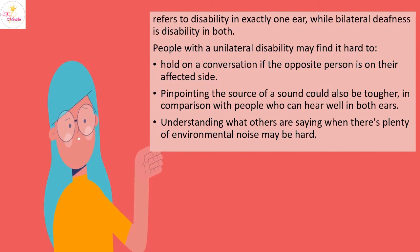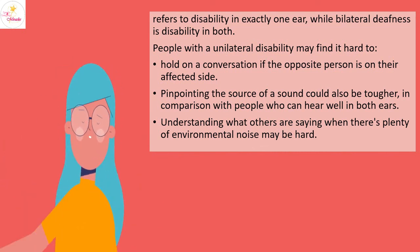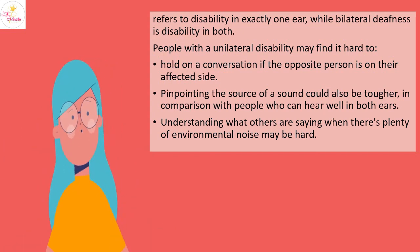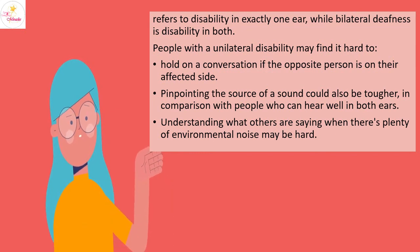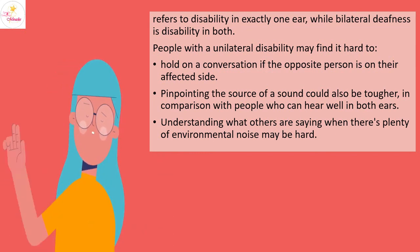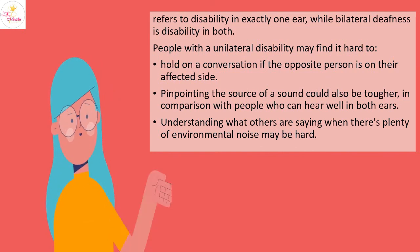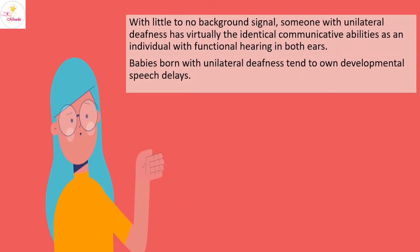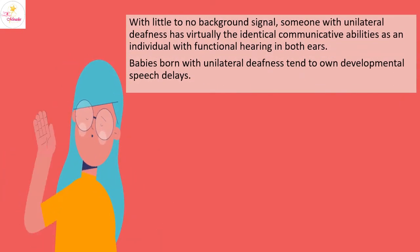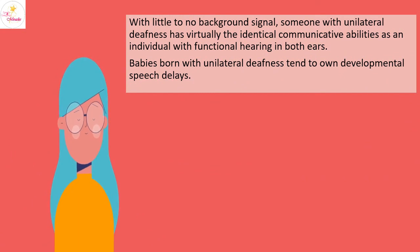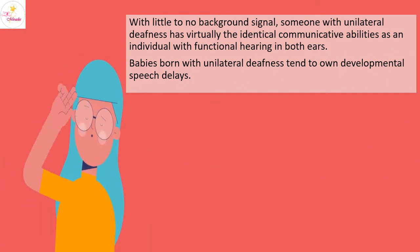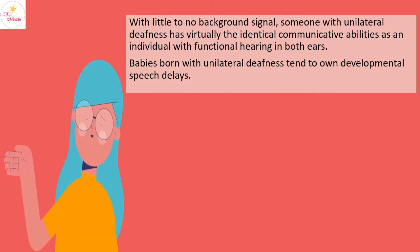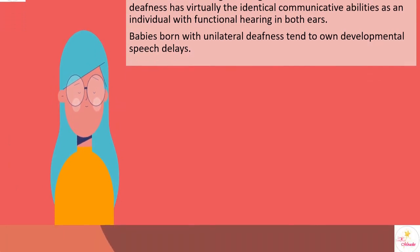Unilateral deafness refers to hearing loss in one ear, while bilateral deafness is loss in both ears. People with unilateral deafness may find it hard to hold a conversation if the other person is on their affected side. Pinpointing the source of a sound is also more difficult. Understanding speech in noisy environments is harder. However, someone with unilateral deafness has virtually the same communicative abilities as someone with functional hearing in both ears in quieter settings.